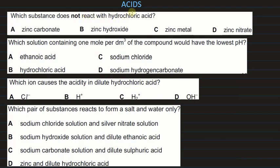Which substance does not react with dilute hydrochloric acid? Carbonates, hydroxides, and metals all react with acids, but nitrates do not react with acids.